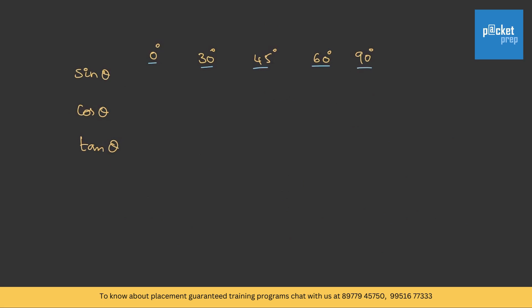Let us start with sin theta. Sin 0 is 0, sin 30 is 1 by 2, sin 45 is 1 by root 2, sin 60 is root 3 by 2, and sin 90 is 1.